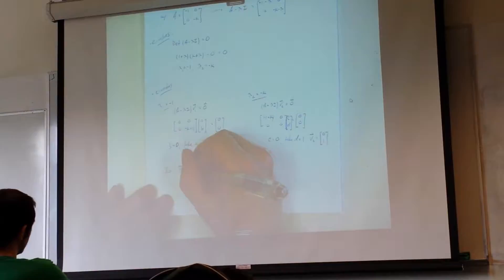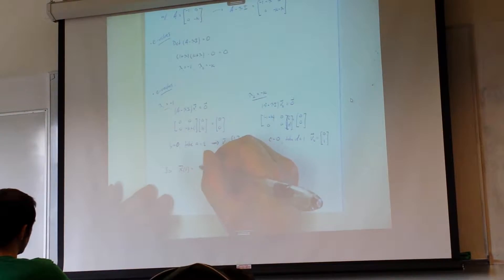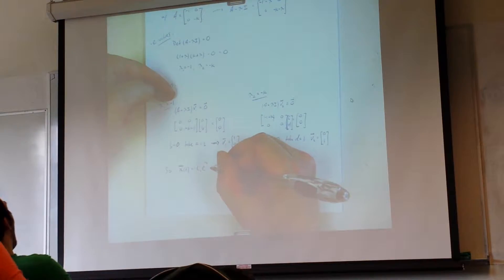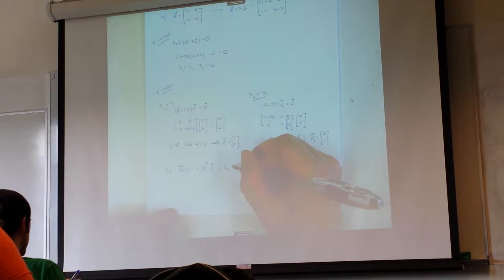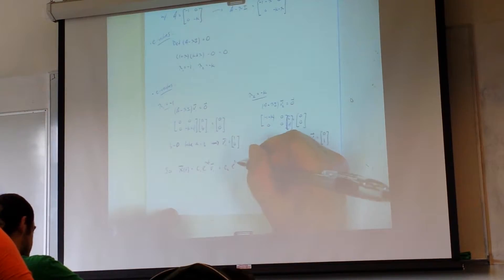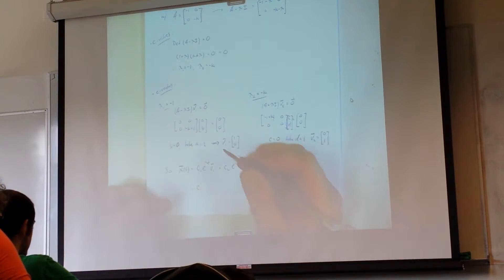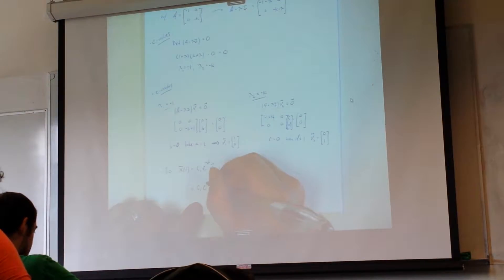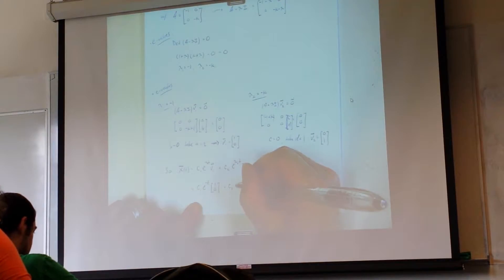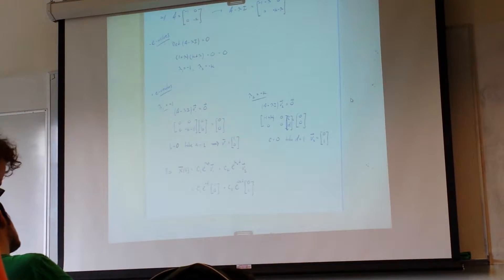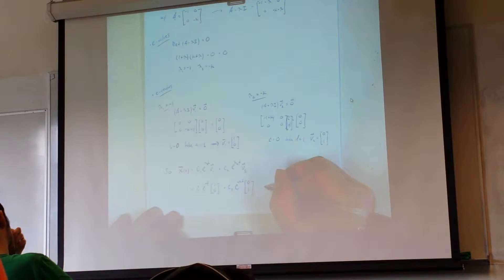Our solution X of T would be C1 times e to the lambda one T times V1, plus C2 times e to the lambda two T times V2. So let's put those in: we get C1 times e to the negative T times V1, which was [1, 0], plus C2 times e to the negative KT times V2, which is [0, 1].